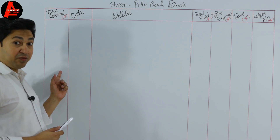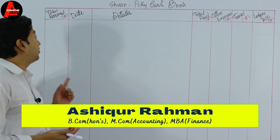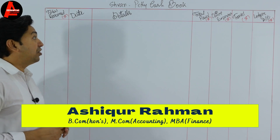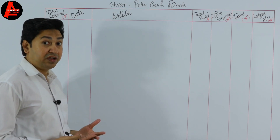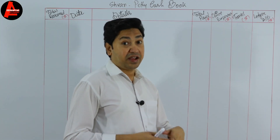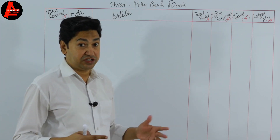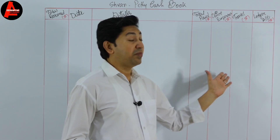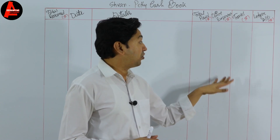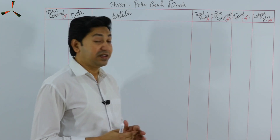Here we see the total receipts column — balance b/d, and if you have any refund or any receipt it will appear here. The date column is for both payment and receipt entries. The detail column is where we record all the transactions, and then we have the total paid column. These three analysis columns depend on the transactions; if you have many accounting heads then we make many columns. We make the format exactly as given in the question.